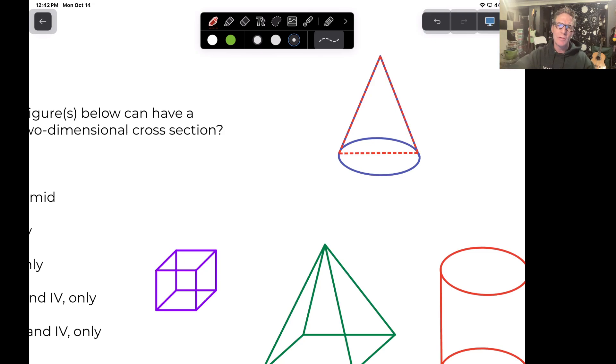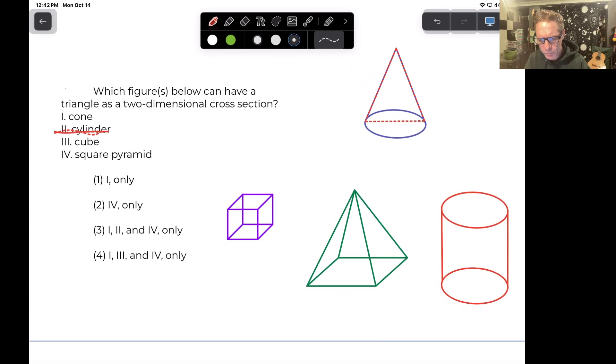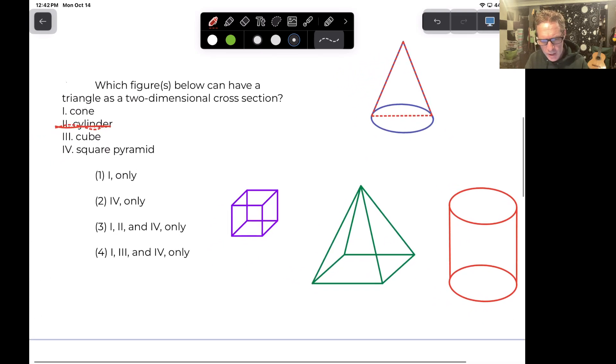You're going to just slice it directly in half from the point, from that vertex. So yeah, you could create a triangle that way. So I just wanted to show you that. So that one works. Let's highlight that.